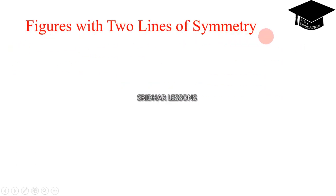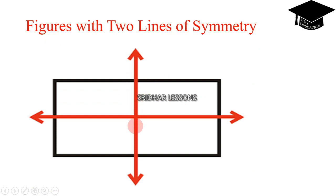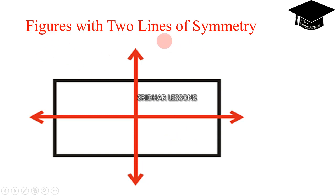Figures with two lines of symmetry. Even when the figure is cut horizontally or vertically, the given picture will be in symmetrical format. That is the meaning of figures with two lines. The two lines may be horizontal or vertical.